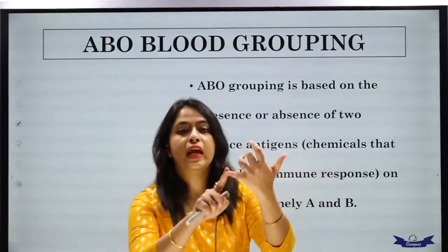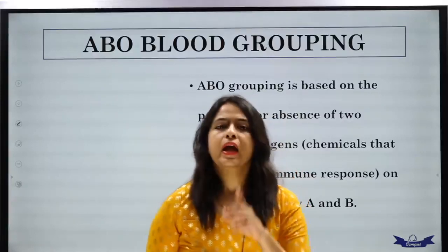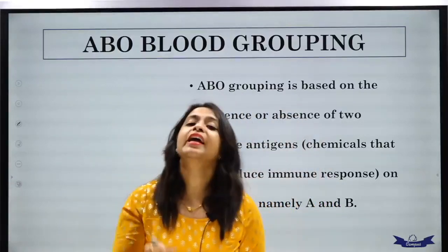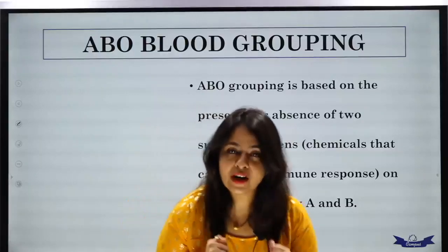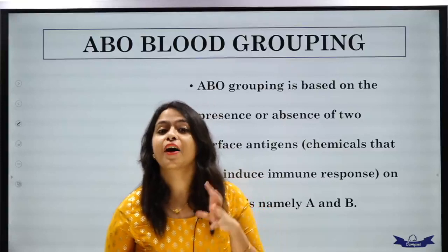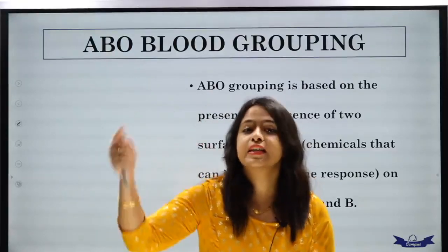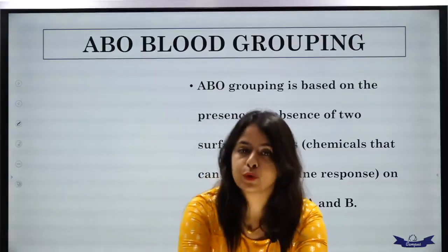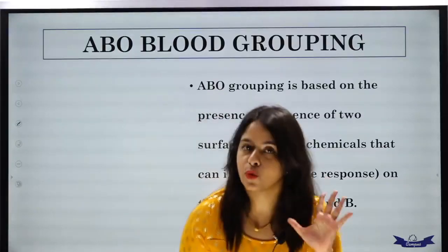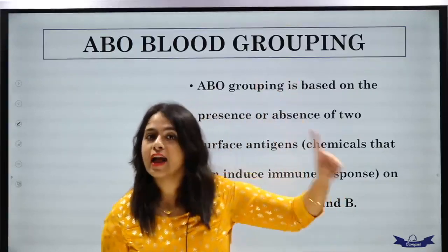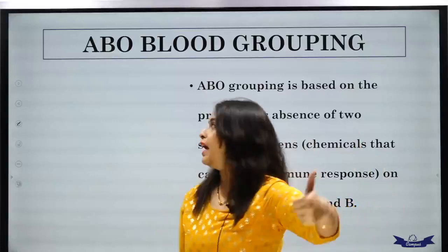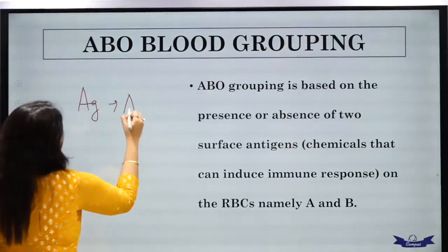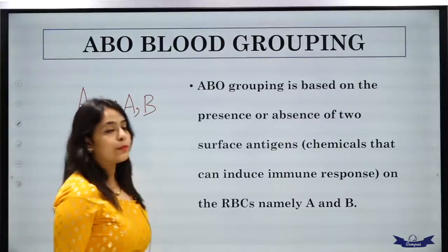Generally, blood groups are of four types: A, B, AB, and O. There is a thumb rule to always remember: whatever your blood group is, that same antigen is present on the surface of your RBC. So if my name is Akriti and my blood group is A, which antigen will be on my RBC? A. Similarly, if someone's blood group is B, which antigen will be on their RBC? B. Karl Landsteiner said antigens are of two types: A and B.